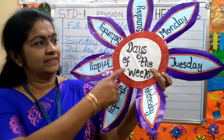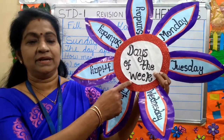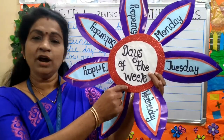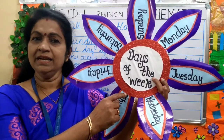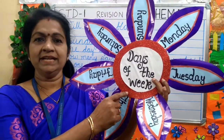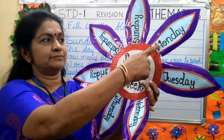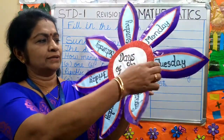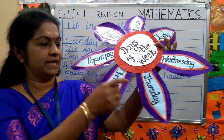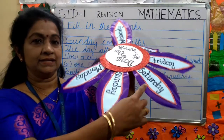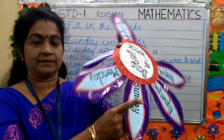Now look children, these are the days of the week. How many days are there in a week? There are seven days in a week. The first: Monday, Tuesday, Wednesday, Thursday, Friday, Saturday and Sunday.